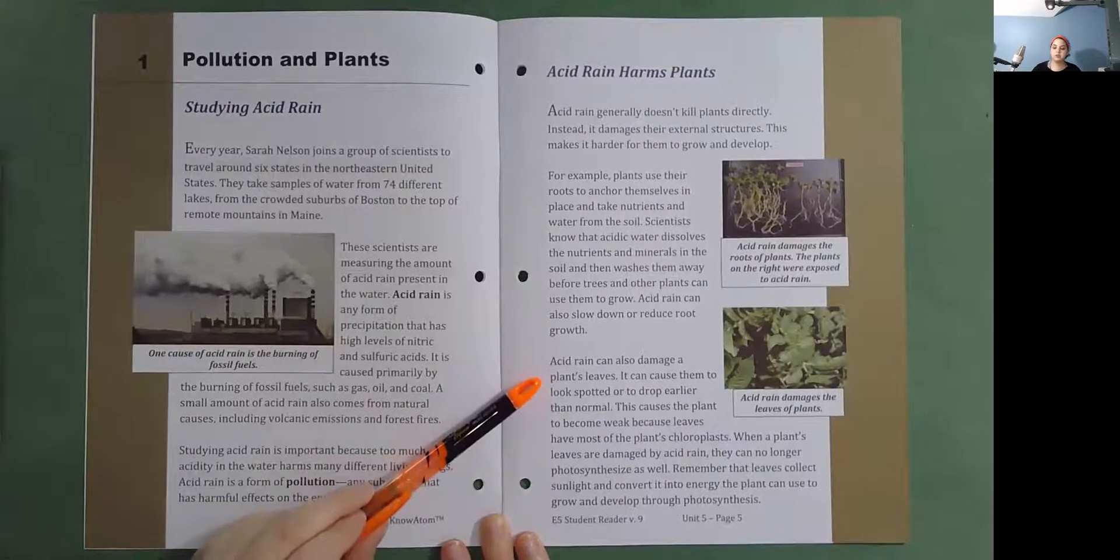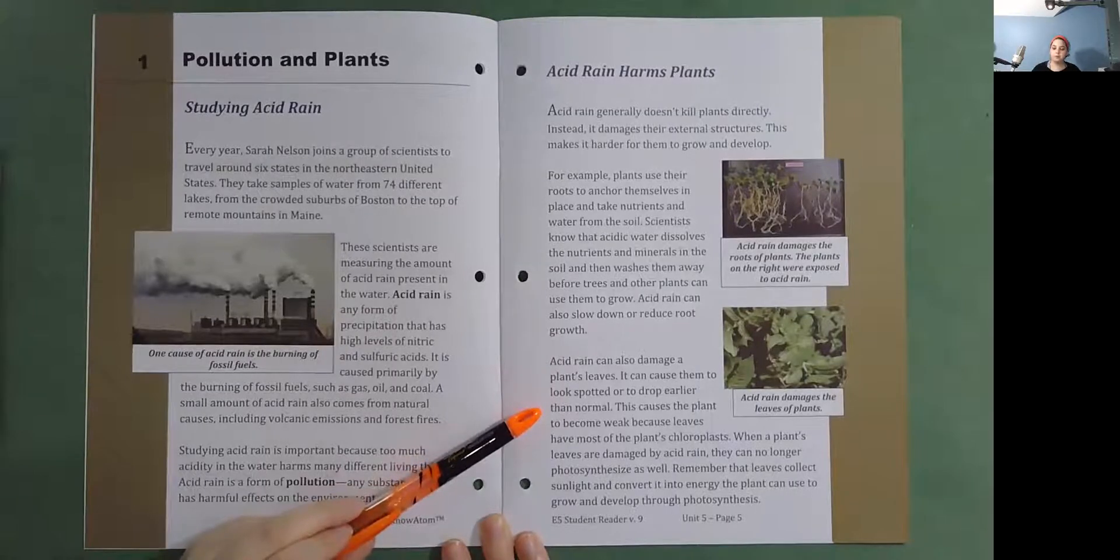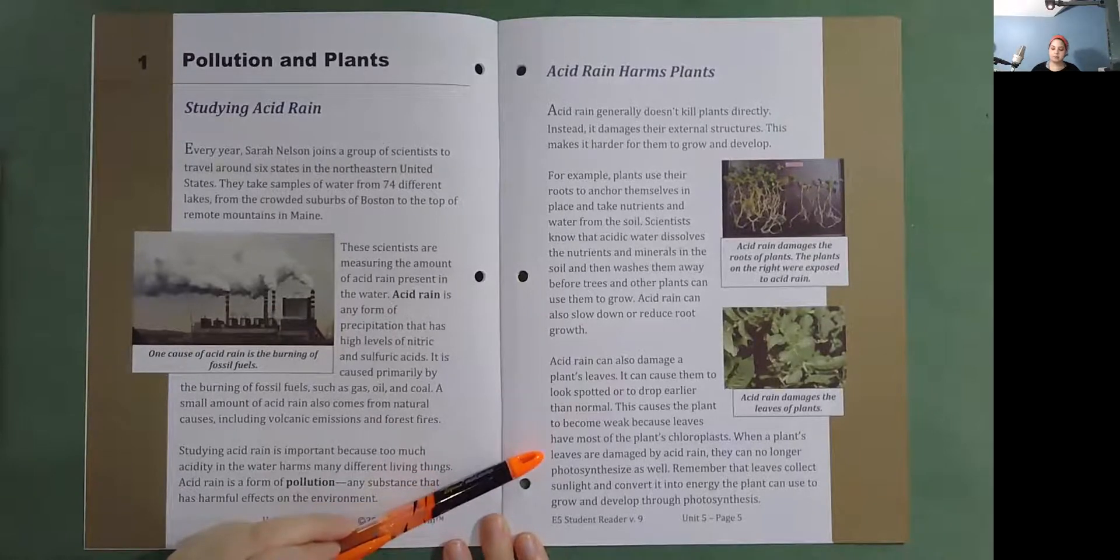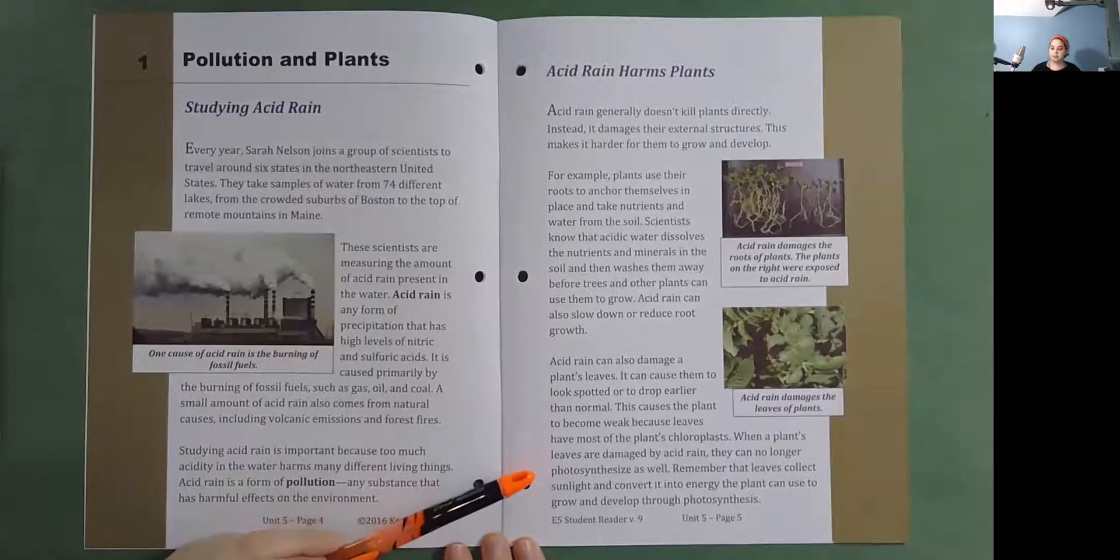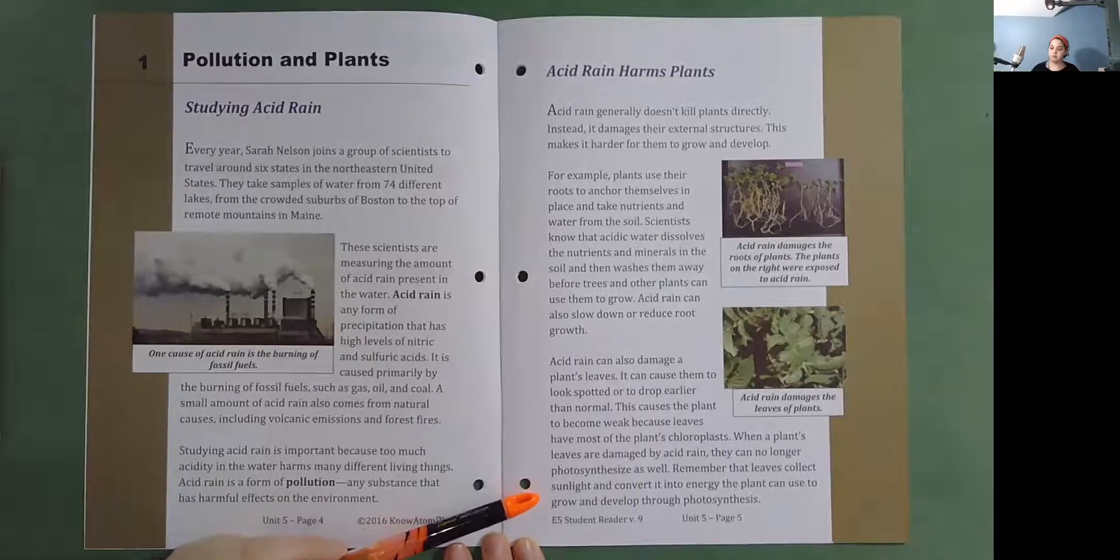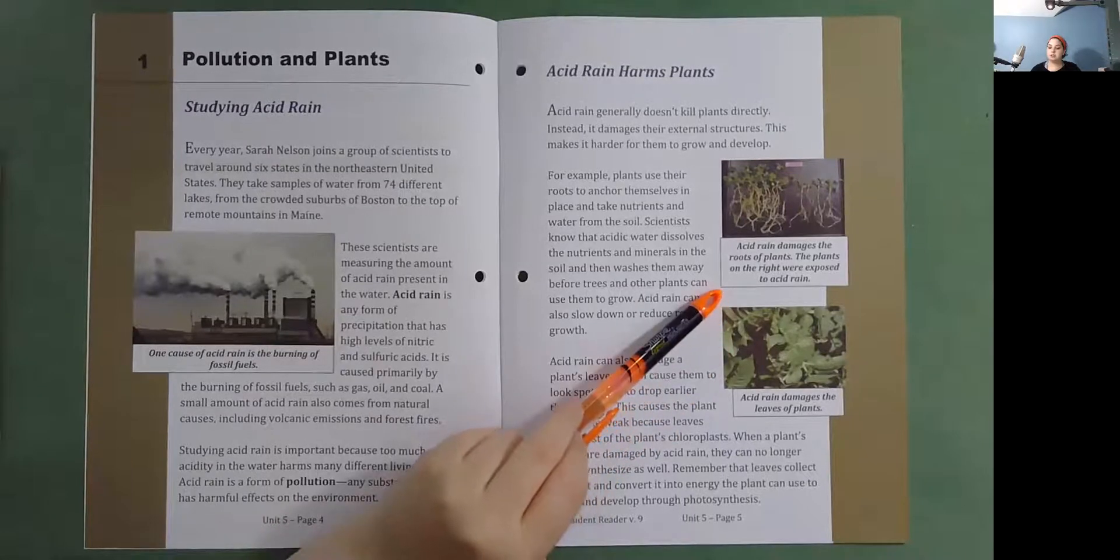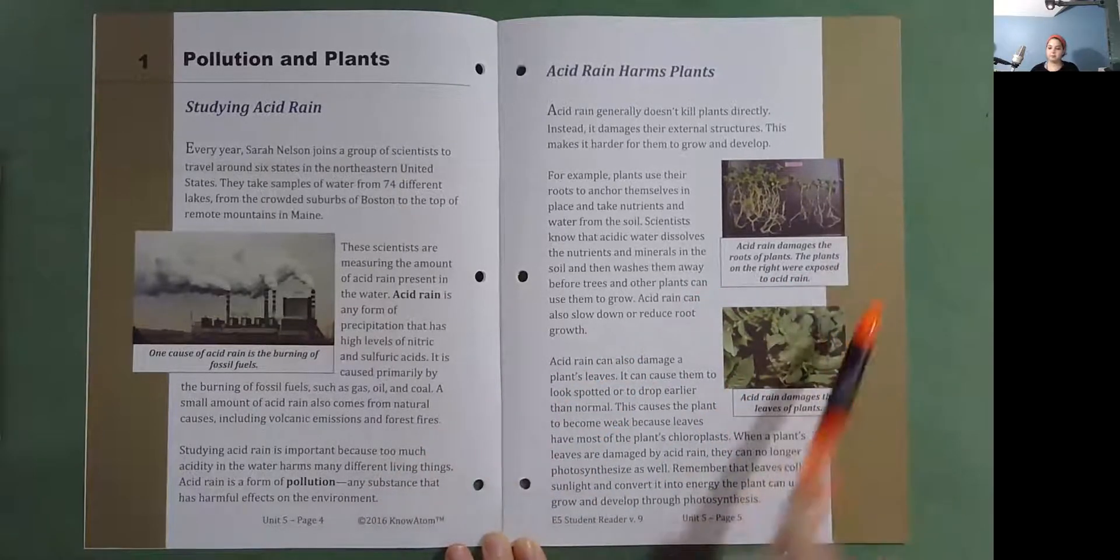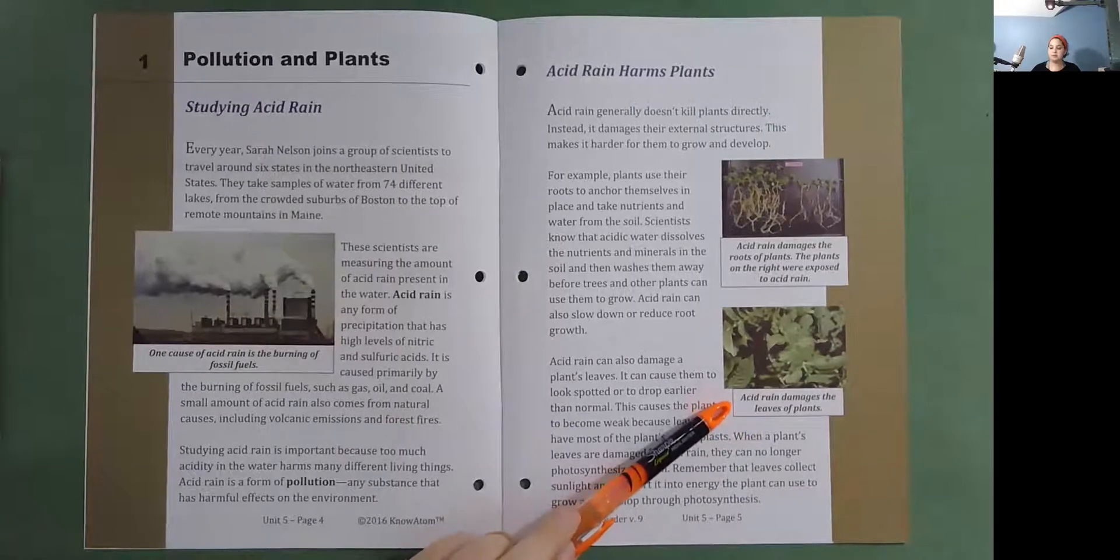Acid rain can also slow down or reduce root growth. Acid rain can also damage a plant's leaves. It can cause them to look spotted or to drop earlier than normal. This causes the plant to become weak because leaves have most of the plant's chloroplasts. When a plant's leaves are damaged by acid rain, they can no longer photosynthesize as well. Remember that leaves collect sunlight and convert it into energy the plant can use to grow and develop through photosynthesis. Acid rain damages the roots and leaves of plants.